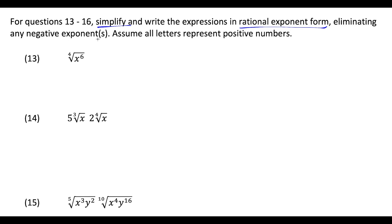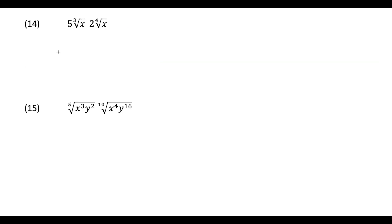For the last four questions we simplify and write answers in rational exponent form with no negative exponents. For question 13, the fourth root of x^6 means x to the power 6 over 4. Dividing top and bottom by 2 gives x to the 3/2.